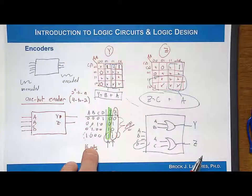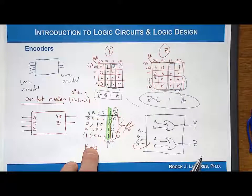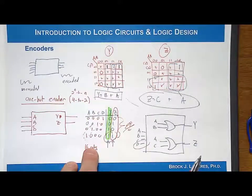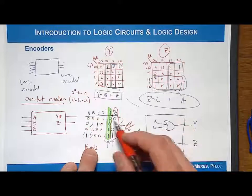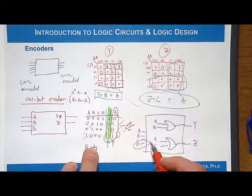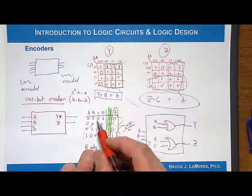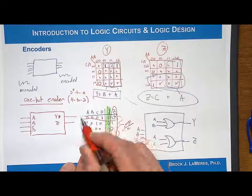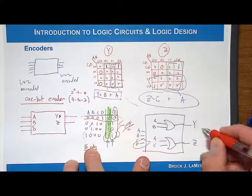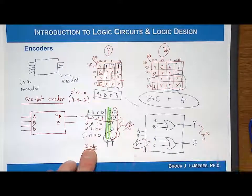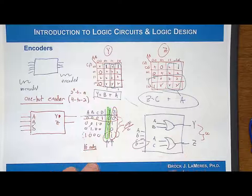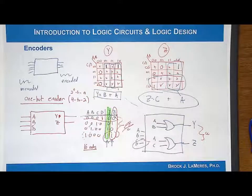So D is not used. What about the situation where D is asserted? When D is asserted, notice what the output codes are - they're 0 and 0. So when D is asserted, its output code is 0 and 0, so it's not actually an assertion. It doesn't need anything to drive it to a 1.